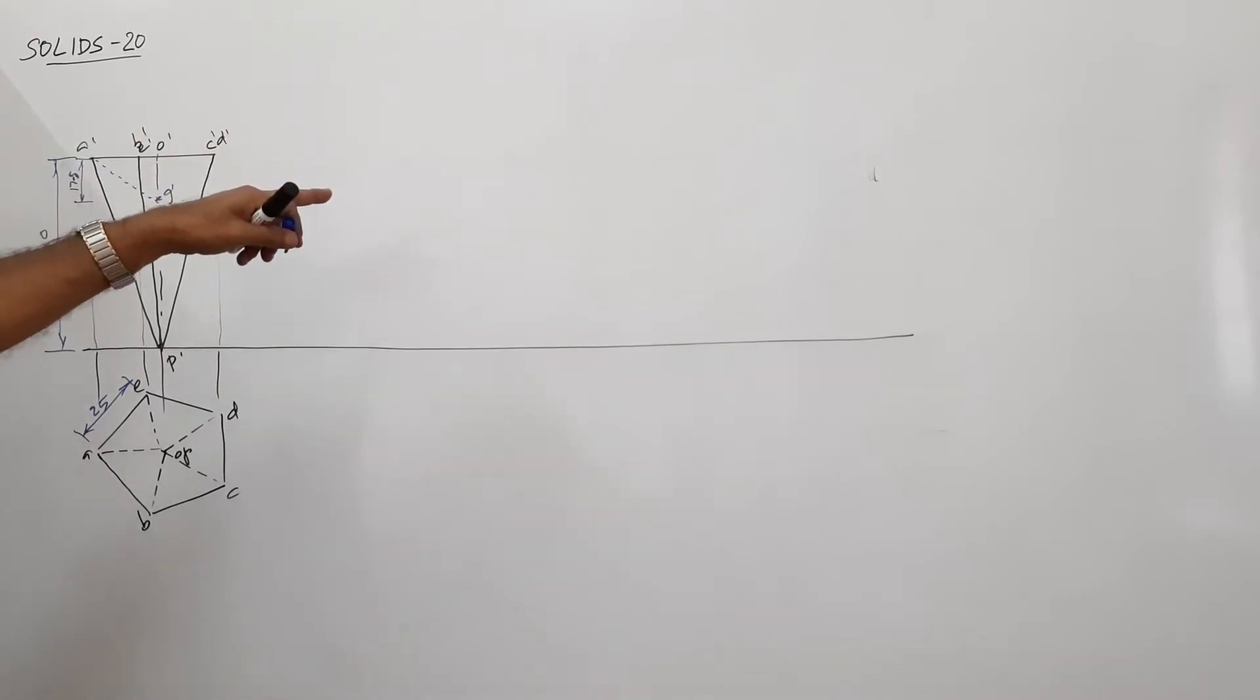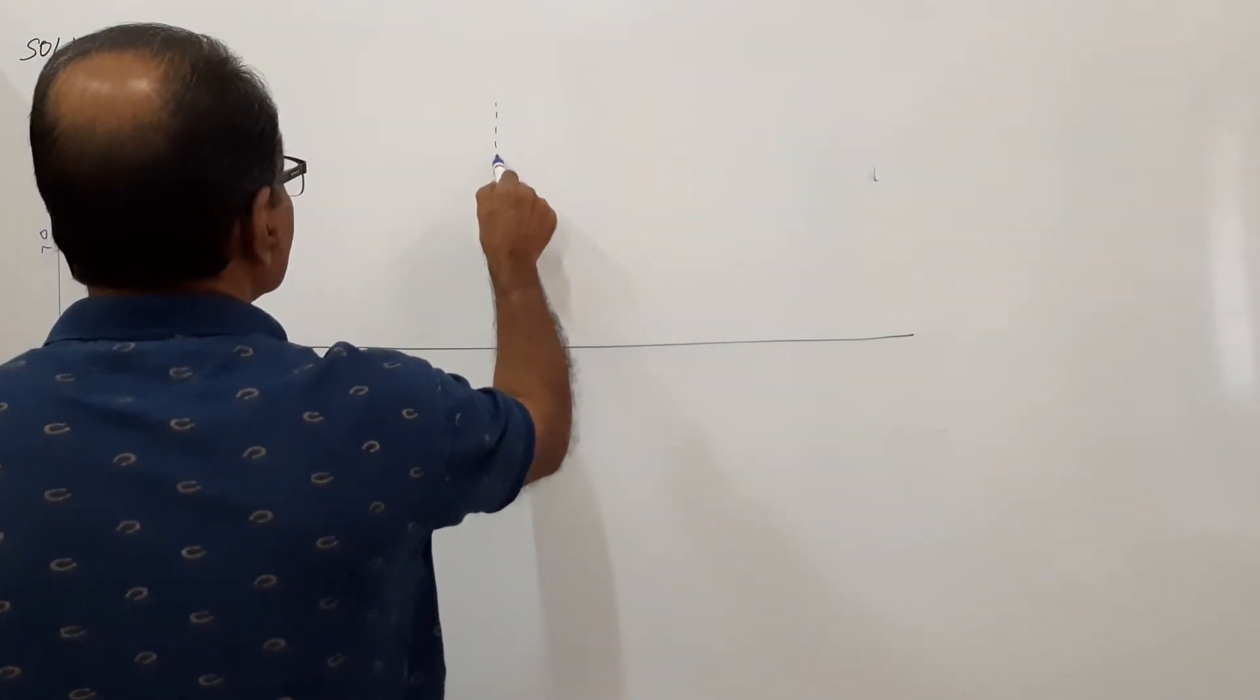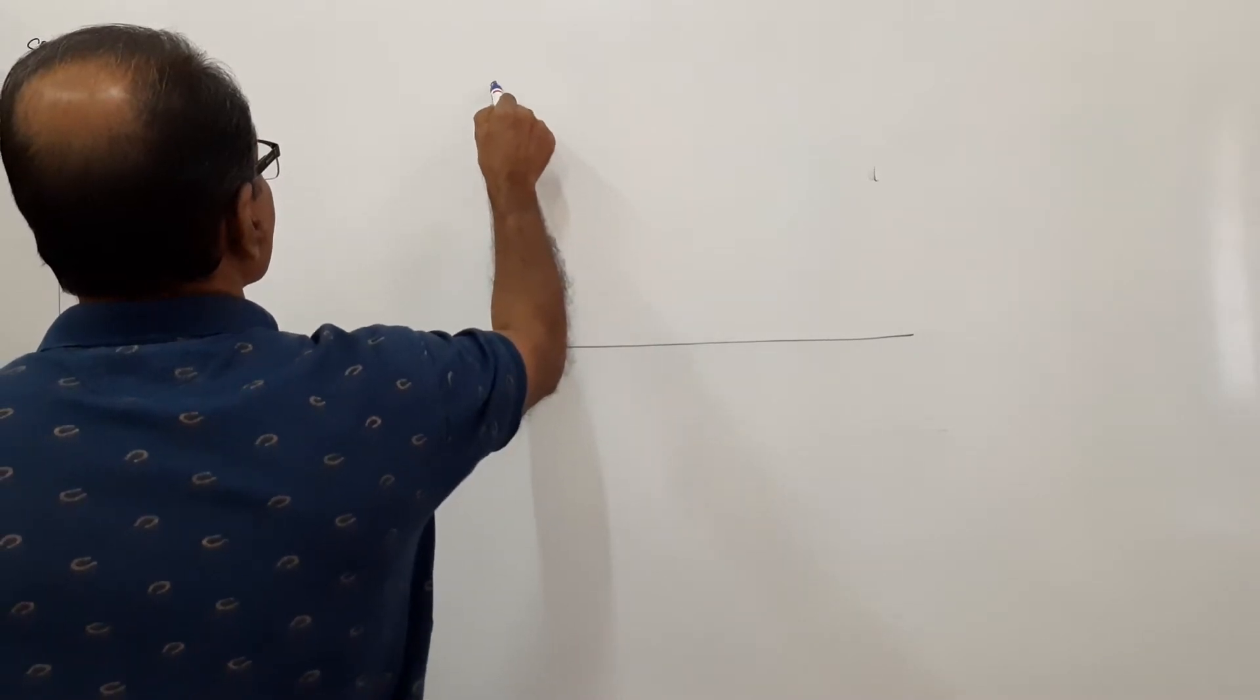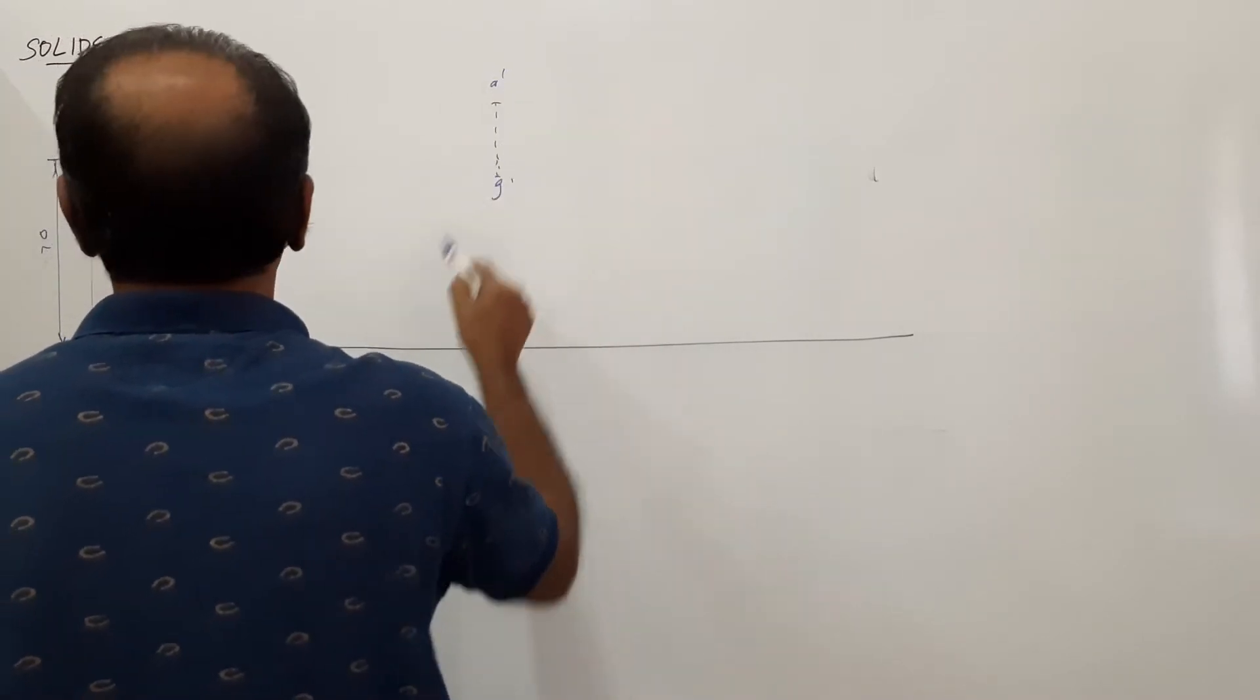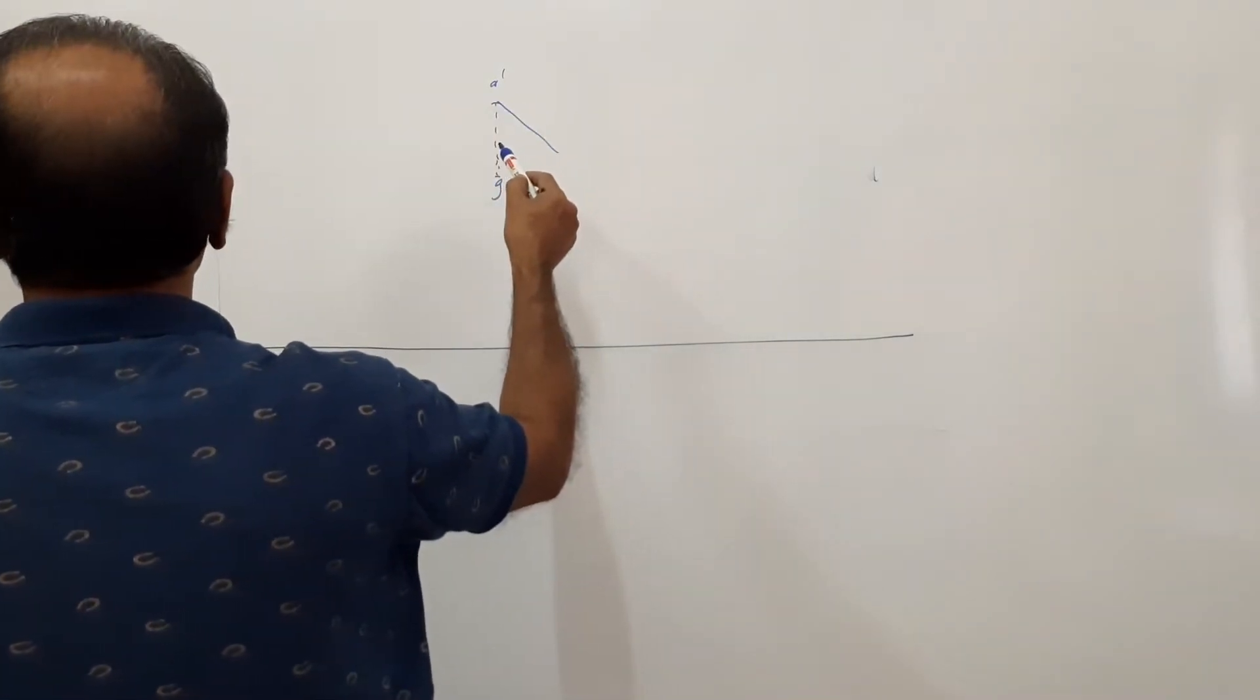So redraw this elevation. Redraw this elevation in such a way that A dash, G dash becomes vertical. A dash, G dash. Redrawing, this will be a difficult task.